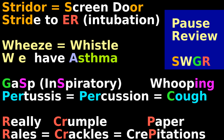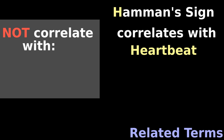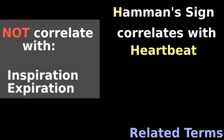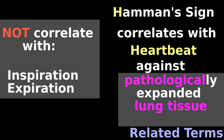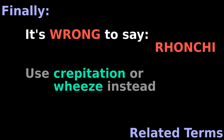SWAGGER — pause and review. SWAGGER reminds you of the major lung sounds, but let's also cover related terms. Hammond's sign correlates with heartbeat; it does not correlate with inspiration or expiration. Hammond's sign happens when the heart beats against pathologically expanded lung tissue, like in emphysema. Finally, it's wrong to say ronchi — use crepitation or wheeze instead.